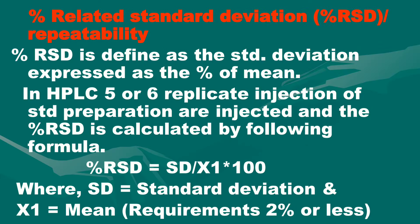Number one is percentage RSD. Percentage RSD is defined as the standard deviation expressed as a percentage of the mean. In HPLC, five or six replicate injections of standard preparation are injected and the percentage RSD is calculated by the following formula: Percentage RSD = (SD / X̄) × 100, where SD is standard deviation and X̄ is the mean. The percentage RSD should be two or less.